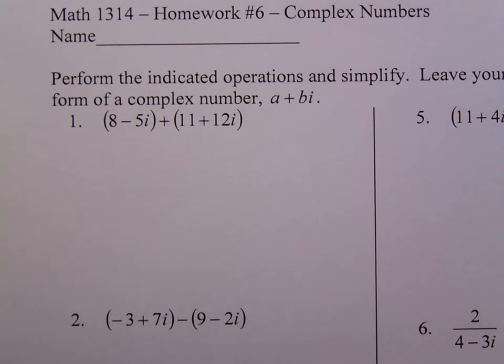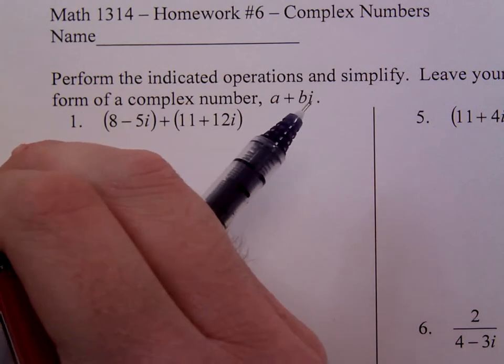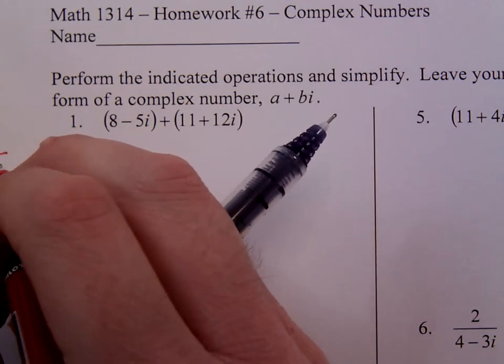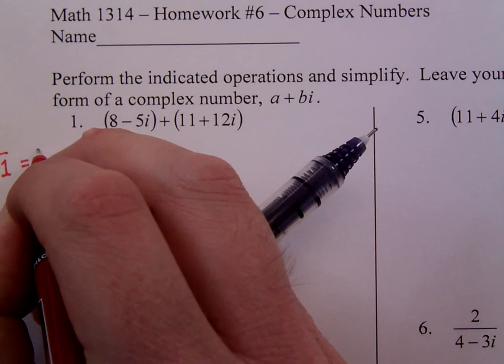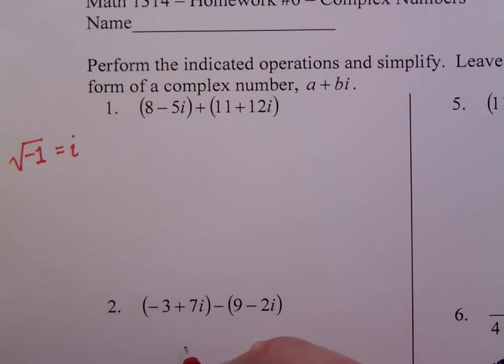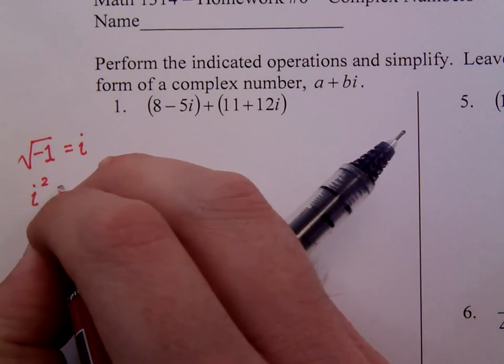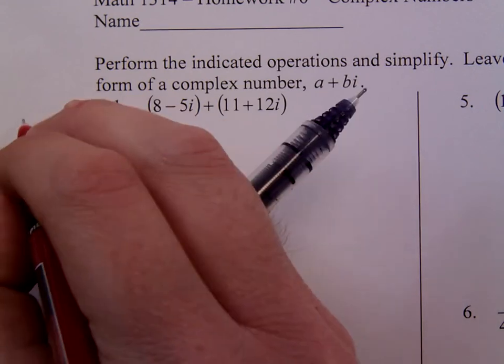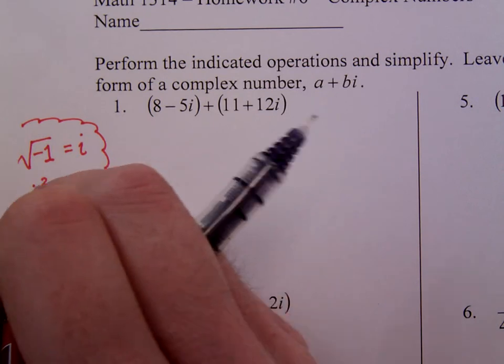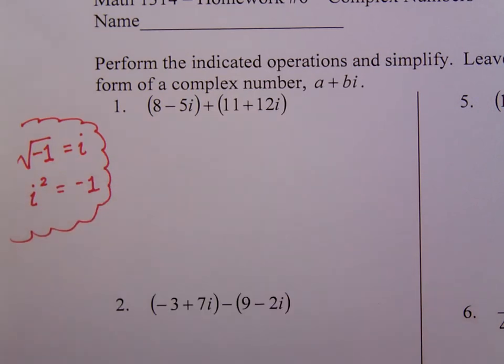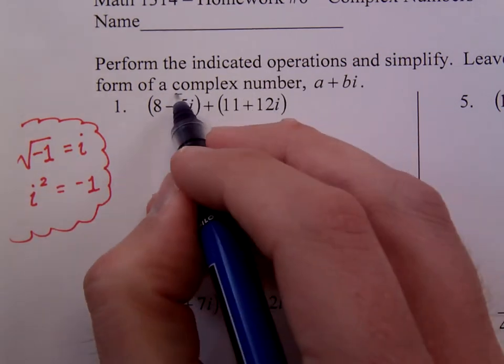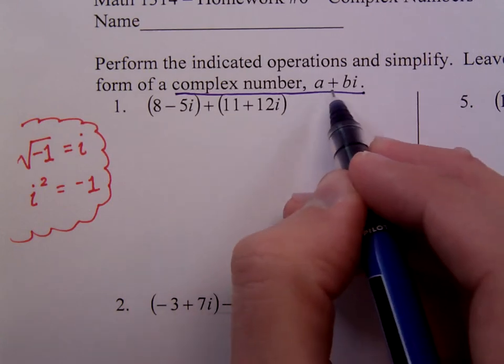Complex numbers is a topic where we try to get a meaning for square roots of negative numbers. This is one of the key things. We define the square root of negative 1 to be i, and in turn that means i squared is equal to negative 1. So just remember that. The form of a complex number is a plus bi. This is standard form.